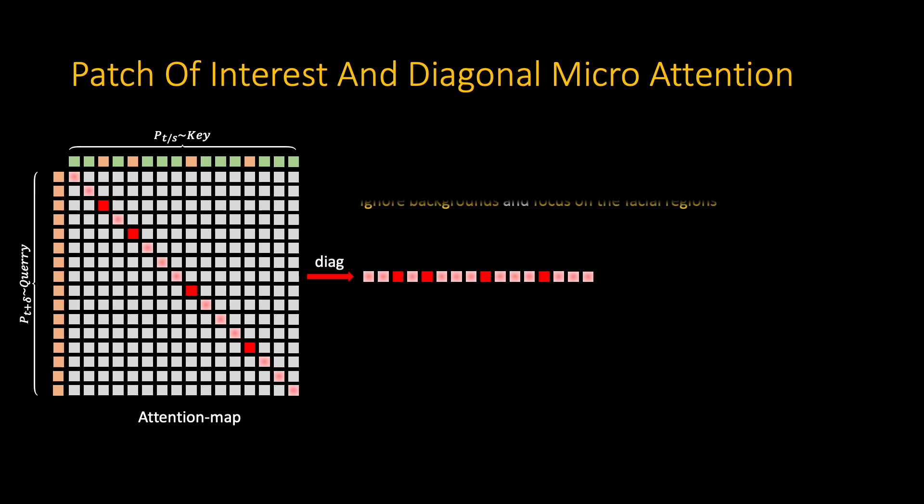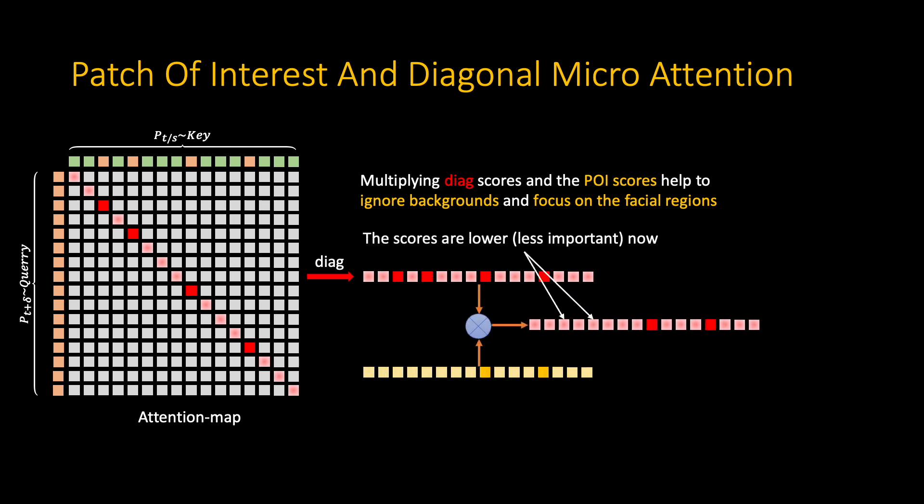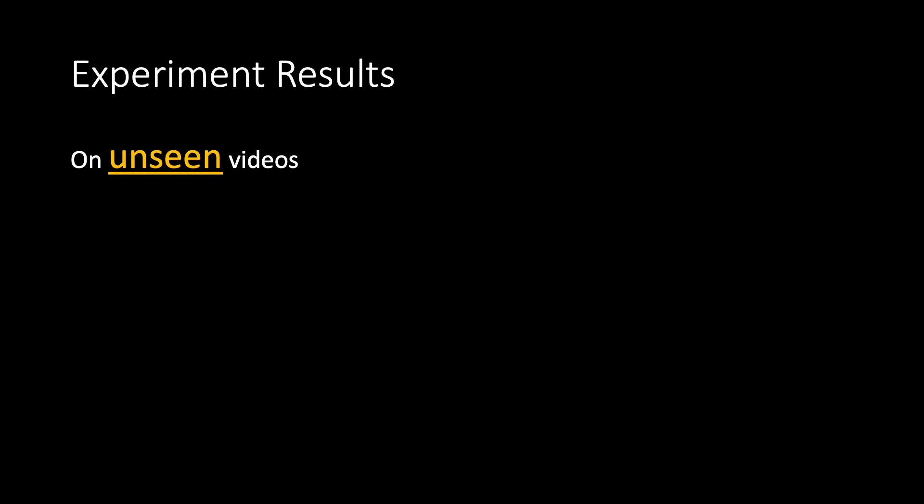Multiplying the diagonal scores and the POI scores helps to ignore backgrounds and focus on the facial regions. By this, the scores for background patches are lower and less important now.